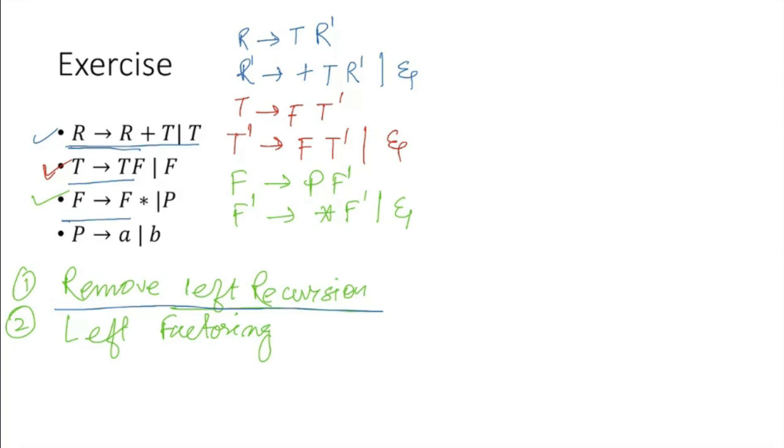And then finally we have this production rule which does not have any left recursion, which is P to a or b. So this is regarding removal of left recursion. But what is left in our hand is doing left factoring.